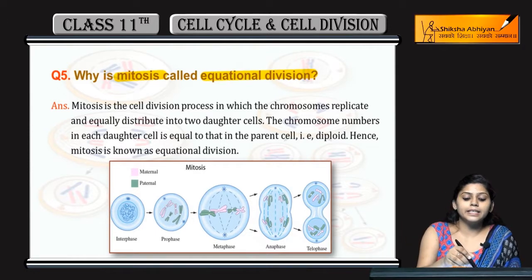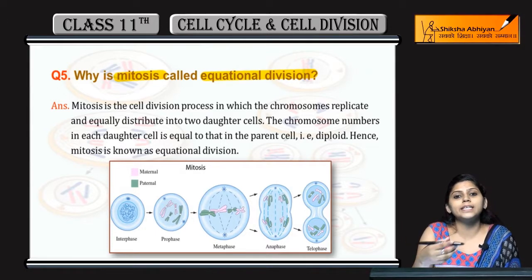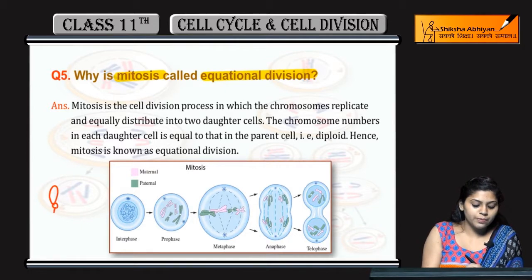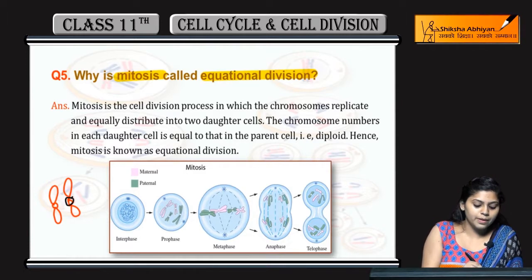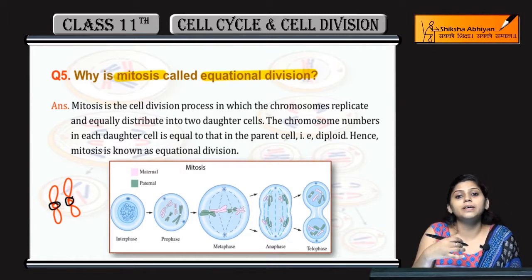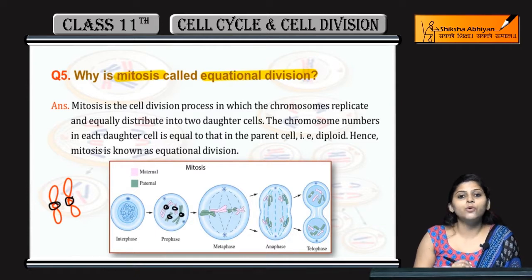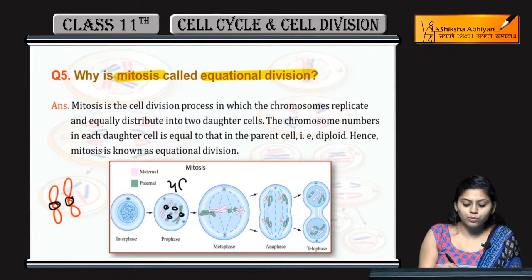First of all, we will see how the number of chromosomes is known. The number of centromeres present tells us the chromosome count. Here in the diagram, we can see 1, 2, 3, and 4 — 4 centromeres means 4 chromosomes.